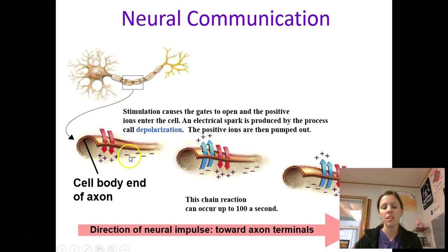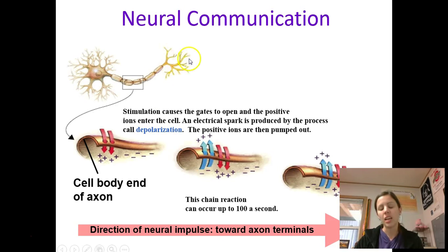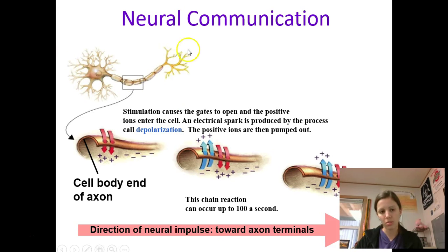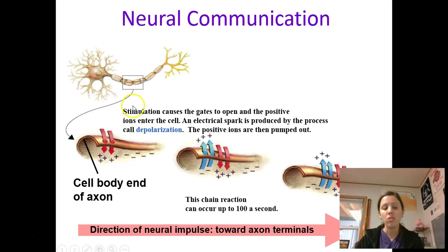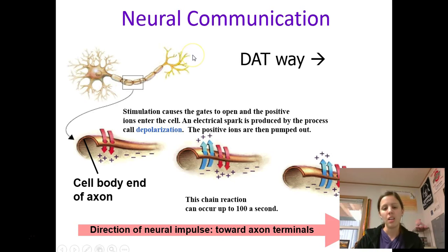Now because the positive ions are coming into the axon, it is no longer polarized — we say it's depolarized — and it follows the nodes of Ranvier all the way down the axon, going in and out until it reaches the terminal buttons and they spit out that information. This whole process of when a neuron fires is called the action potential. You must remember that neurons only fire in one direction — always starting at the dendrites and moving to the end. The mnemonic to remember that: Dendrites, Axon, Terminal buttons — DAT.